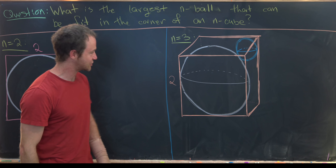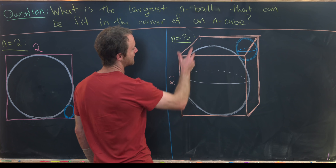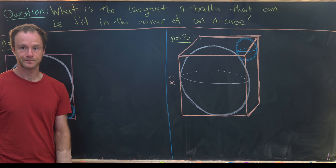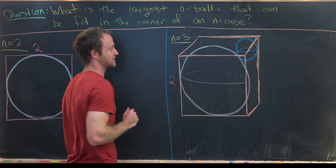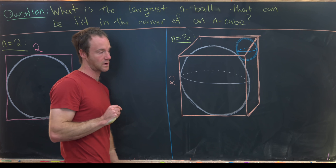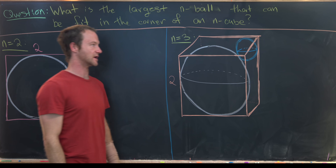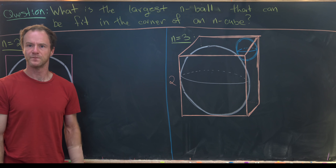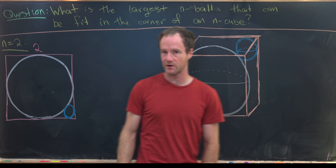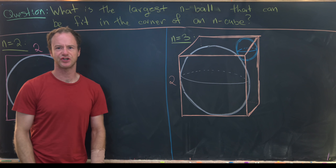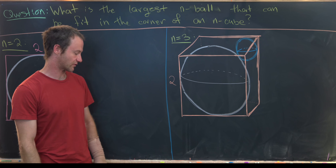In the three-dimensional case I've got a sphere within a cube, and that cube has side length two, making the sphere radius one. I want to figure out what's the largest sphere I can put in the corner up here. Let's answer the 2D question first, then the 3D question, and then we'll see how to proceed to the general case.